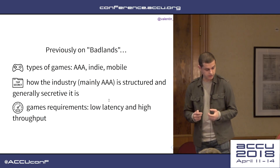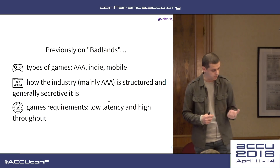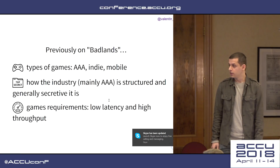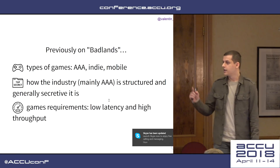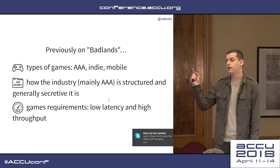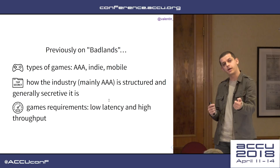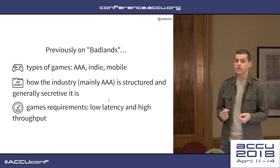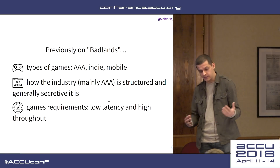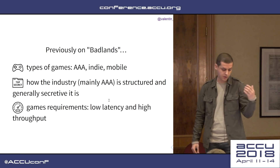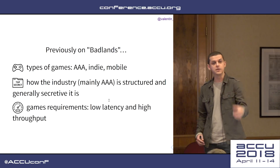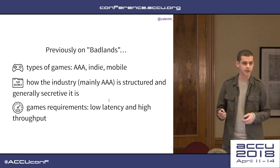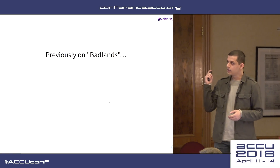We talked about the particular requirements of games: you have low latency but at the same time high throughput. For example, low latency — you push a button on a controller, you want that character to jump as fast as possible. But at the same time we need high throughput — there's a lot of stuff moved around memory, from disk to memory, from CPU to GPU. You've got to push those millions of pixels, especially nowadays with 4K and stuff like that.